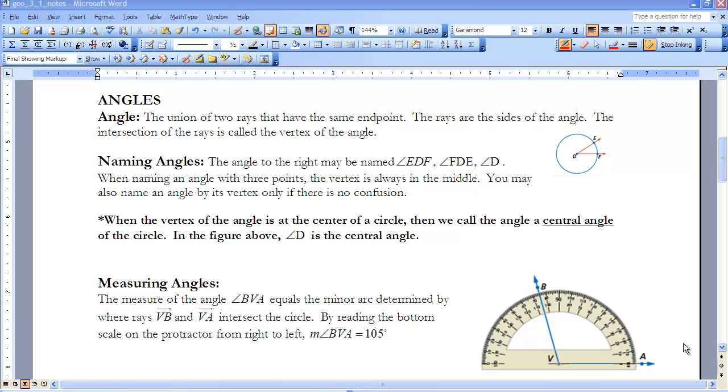So angles. First of all, you've been talking about angles since back in elementary school. But let's just redefine it here. An angle is the union of two rays that have the same endpoint. The rays are the sides of the angle, and the intersection of the ray is called the vertex of the angle.